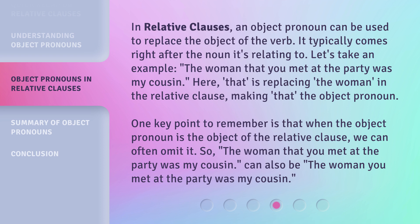One key point to remember is that when the object pronoun is the object of the relative clause, we can often omit it. So 'The woman that you met at the party was my cousin' can also be 'The woman you met at the party was my cousin.'